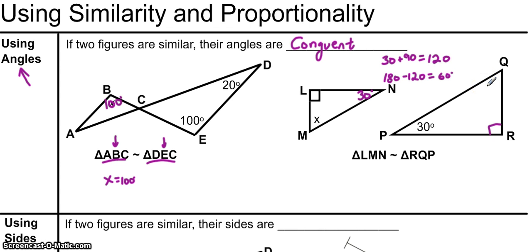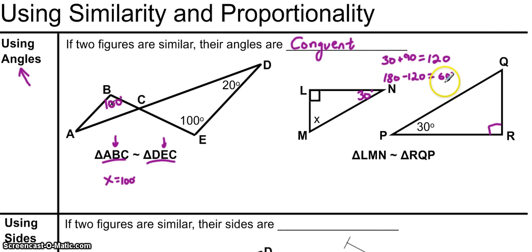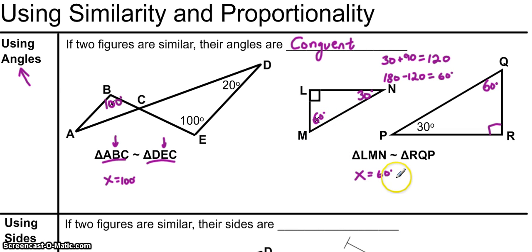However, I remember that all of the angles in a triangle should add up to 180 degrees. So all I need to do is add the other two angles, 90 and 30, to get 120, subtract that from 180, and we're left with both angle Q and angle M being 60 degrees, so X equals 60 degrees.